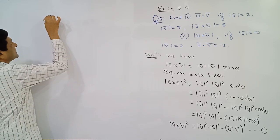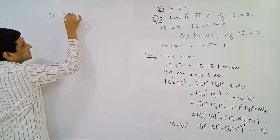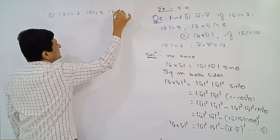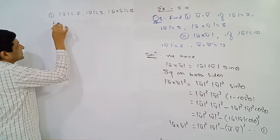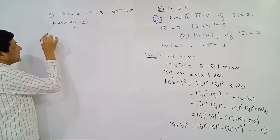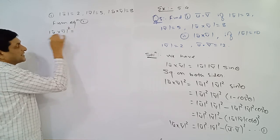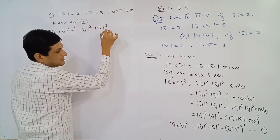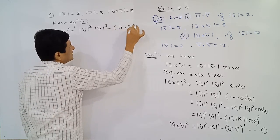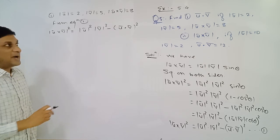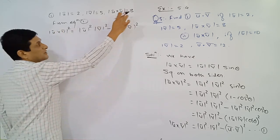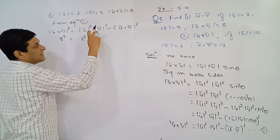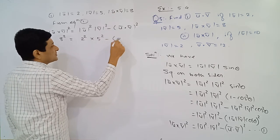Applying equation one, we solve the first example. In the first example, magnitude of u-bar equals 2, magnitude of v-bar equals 5, and magnitude of u-bar cross v-bar equals 8. From equation one: square of |u×v| = square of |u| times square of |v| minus square of (u·v). Substituting: 8 squared = 2 squared times 5 squared minus (u·v) squared.